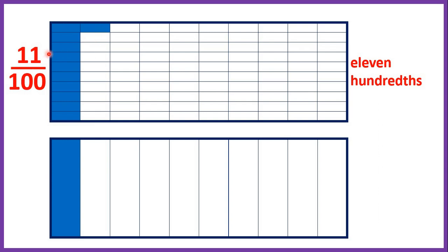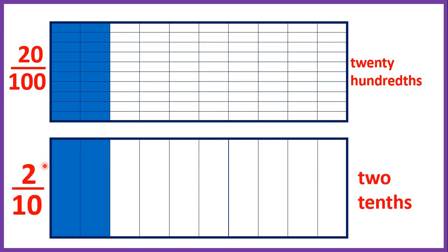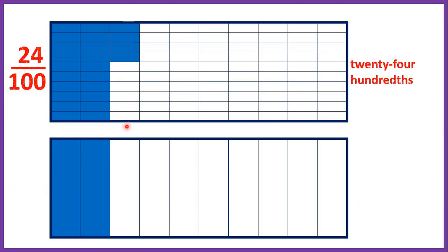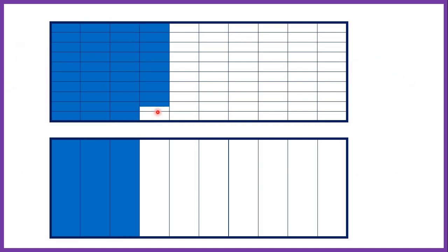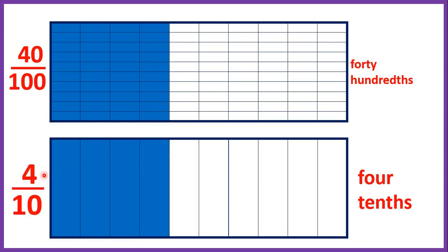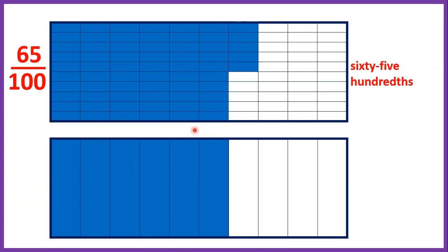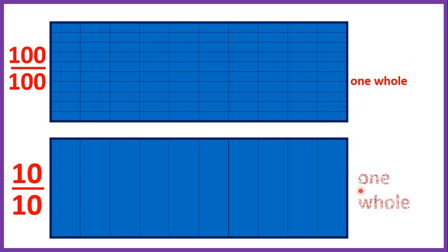Counting on, 11 hundredths is just a little bit more than 1 tenth. When we get to 20 hundredths, that's the same as having 2 tenths. When we get to 30 hundredths, that's 3 tenths. And 39 hundredths is just a little bit less than 4 tenths, so 40 hundredths is equivalent to 4 tenths. Finally, if you've got 100 hundredths, you've got one whole — and likewise, if you've got 10 tenths, you've got one whole.